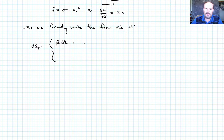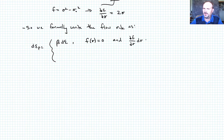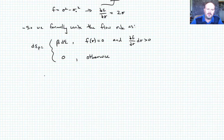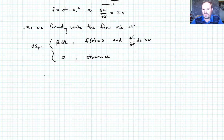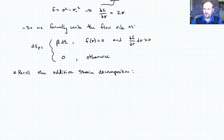The flow rule is formally written as: d_epsilon_P equals beta times d_epsilon, subject to f(sigma) equals zero AND the partial of f with respect to sigma times d_sigma greater than zero; otherwise d_epsilon_P equals zero. This says that during yielding, some fraction beta of any total strain increment goes into plastic strain. It doesn't yet tell us the value of beta.